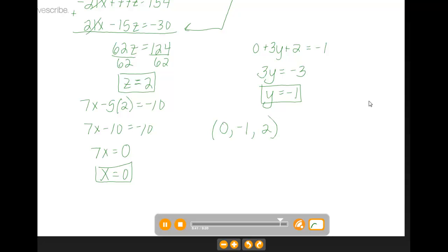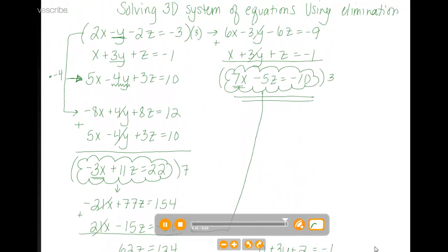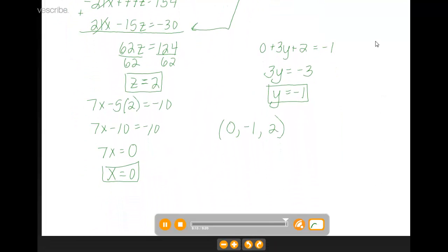So just to recap what we did is we picked two equations, eliminated one variable. In this case, we started off with y, but you could do whichever one seems easiest to you. Pick another set of two equations, eliminating that same variable. So we eliminated y again. Then we were left with two equations with two variables. In this case, we just had x and z. We solved that as we've been doing, solved for one variable by elimination again, plugged back in, and then plugged back into one of our original equations to get that third variable. So it's really nothing new. It's just sort of a repeated process of elimination. Good luck with the practice!